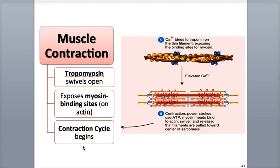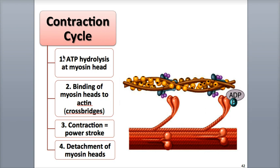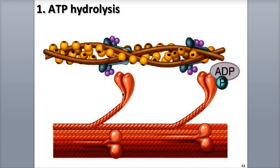Now the four-step contraction cycle begins, and it's as easy to remember as A, B, C, and D. The first step, Step A, is ATP hydrolysis. On the myosin head, there is an ATP binding site and an enzyme called ATPase. Remember that enzymes often end in the suffix -ase. This enzyme ATPase hydrolyzes, or breaks down, ATP — its substrate — into ADP and a phosphate group. Both of these products remain attached to the myosin head after the reaction. Now the myosin head is activated; it's at a higher energy state and is repositioned so it's in a better position to attach to the actin.